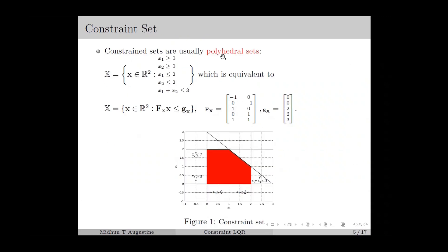The constraint sets are usually in the form of polyhedral sets in the case of linear inequality constraints. For example, if we consider the second order case with linear inequality constraints on x1 and x2, which we can compactly represent as fx*x ≤ gx, where fx and gx are as given. The first and second inequalities can be rewritten as minus x1 ≤ 0 and minus x2 ≤ 0, which is why we have a minus 1 in the first and second row of fx. Each inequality will add a row to fx and gx, and can be represented as a half-space in figure 1. The common region satisfying all inequalities, shown in red, is a polyhedral with 5 vertices and edges.